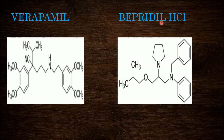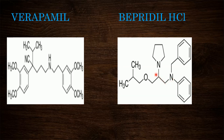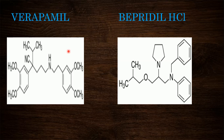Next structure is bepridyl hydrochloride. It contains two phenyl rings attached to an amino group — one phenyl group is directly attached, and another is attached via a methyl linkage. This amino group also contains a propyl group. At the second position of the propyl group, a pyrrolidine ring is present with an oxy bridge, to which an isobutyl group is attached. Hydrochloride is added to increase the bioavailability and absorption of the drug.